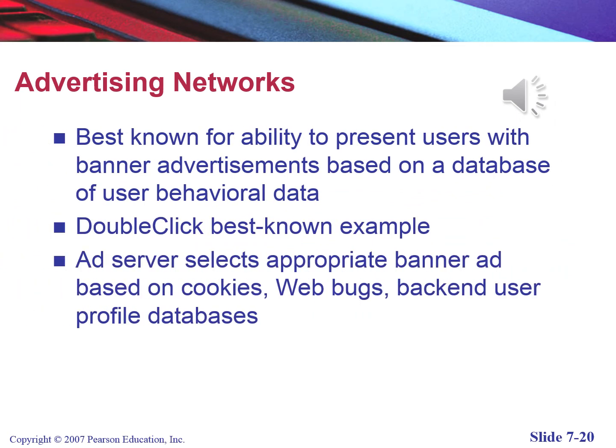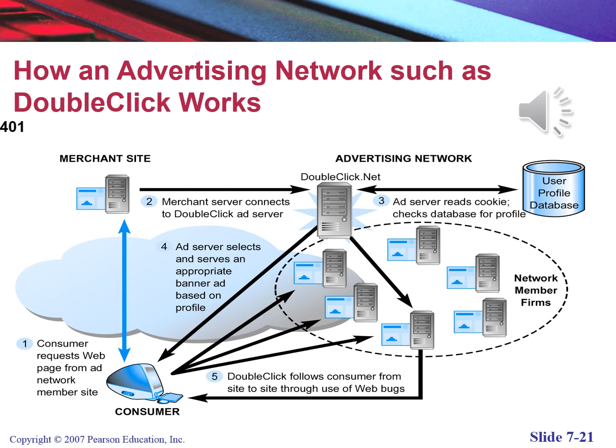Specialized marketing firms, called advertising networks, help firms take advantage of the powerful marketing potential of the internet and make the entire process of buying and selling online ads more efficient and transparent. These ad networks have proliferated and greatly increased the scale and liquidity of online marketing. Advertising networks begin with the consumer requesting a page from a member of the advertising network. A connection is established with a third-party ad server, which identifies the user by reading the cookie file on the user's hard drive and checks its user profile database. The ad server selects an appropriate banner ad based on the user's previous purchases, interests, demographics, or other profile data. Whenever the user visits any of the network member sites, the ad server recognizes the user and serves up ads, following users from site to site through the use of web tracking files.